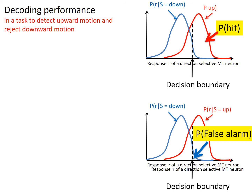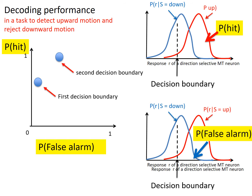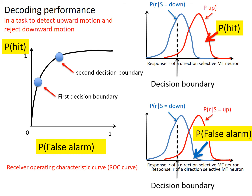If we move the decision boundary, then the hit rate and false alarm rate increase or decrease together. So if we plot these two rates against each other, these are the two corresponding pairs of hit rates and false alarm rates for the two decision boundaries. With all possible decision boundaries, we get this whole curve, which is called the receiver operating characteristic curve, or ROC curve. The area under this curve is never less than 0.5 or 50%, and no more than 100%. Decoding performance is better when this area is bigger.